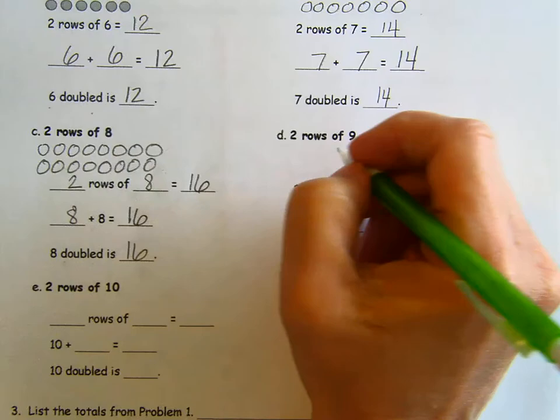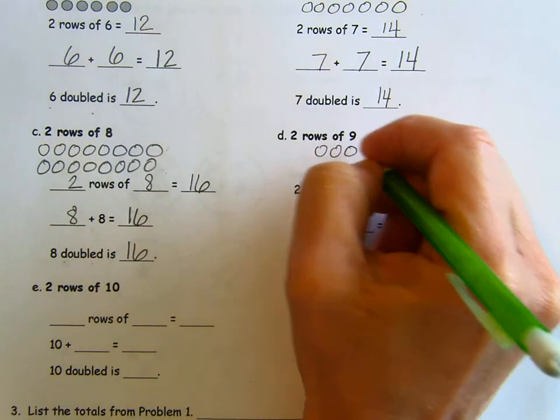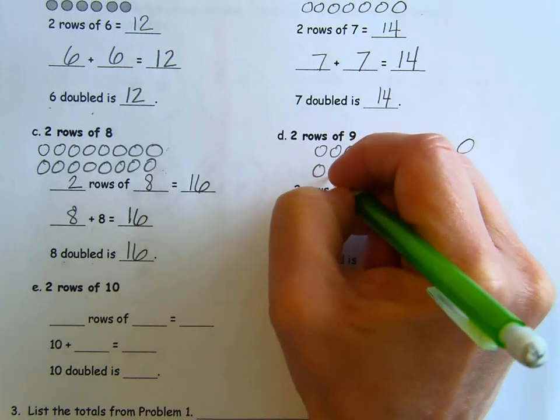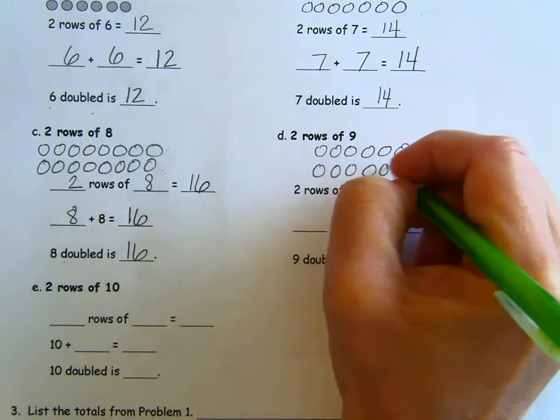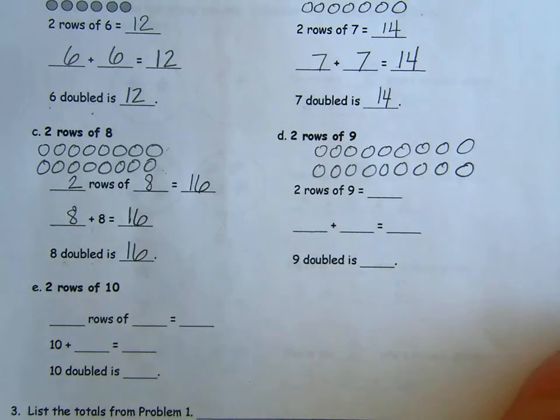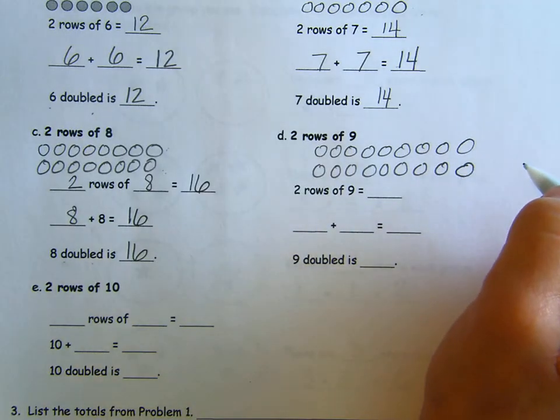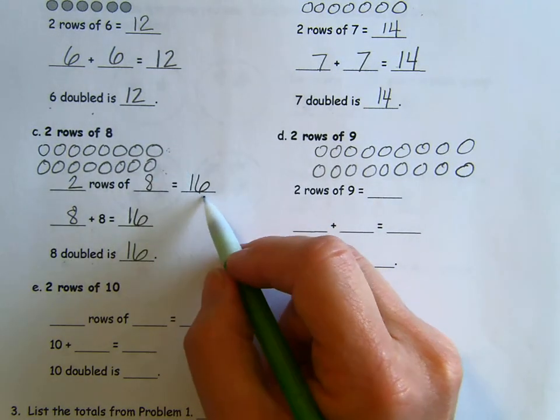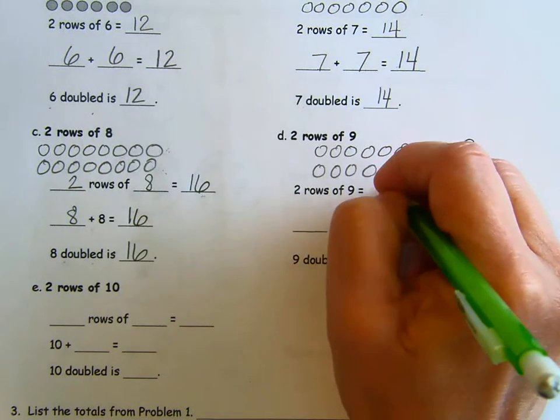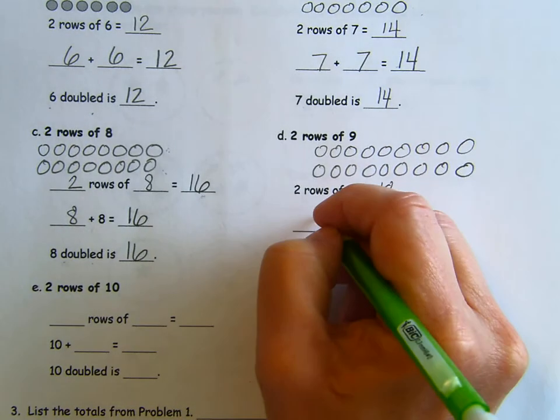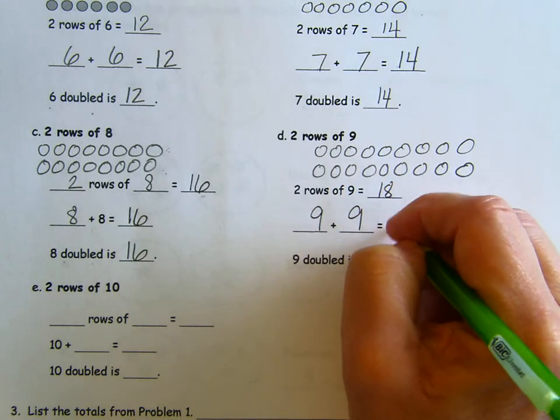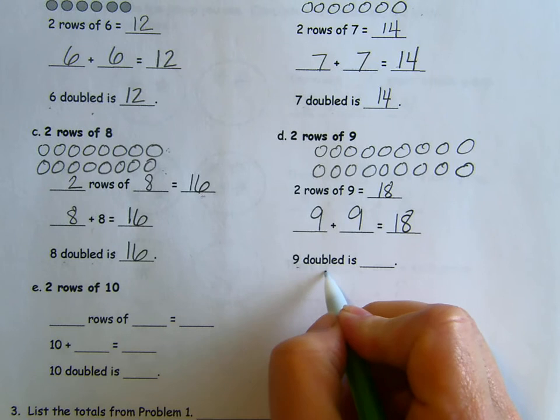Two rows of nine. One, two, three, four, five, six, seven, eight, nine. One, two, three, four, five, six, seven, eight, nine. Two rows of nine is, well, it's the same as this one except we put another one on the top and another one on the bottom. So two more. Two rows of nine is 18. The doubles fact is nine plus nine equals 18. If we have nine and we double it.